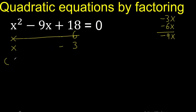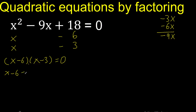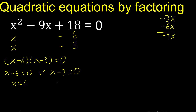Therefore the factored form equals 0. This factor equals 0 or this factor equals 0. Finish.